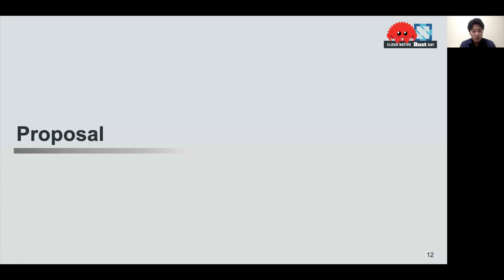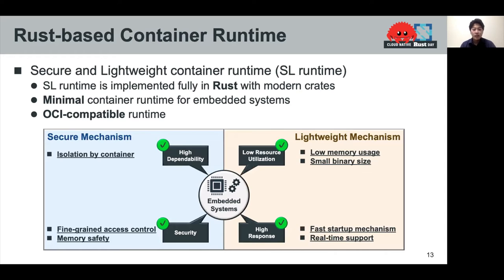Now I'll talk about our proposal to solve these problems. I propose SL runtime — a Rust-based, secure, and lightweight container runtime for embedded systems. SL runtime is implemented fully in Rust with modern features and is an OCI-compatible minimal container runtime for embedded systems. SL runtime is roughly divided into a secure mechanism and a lightweight mechanism. In the secure features, there is isolation by container for high dependability, fine-grained access control, and memory safety by Rust for security. In the lightweight mechanism, there is low memory usage and smaller binary size from the benefits of Rust, fast startup as our original feature, and real-time support for embedded systems.